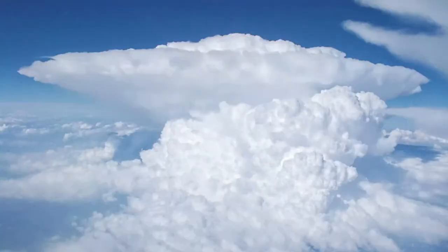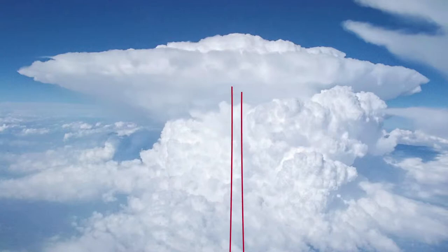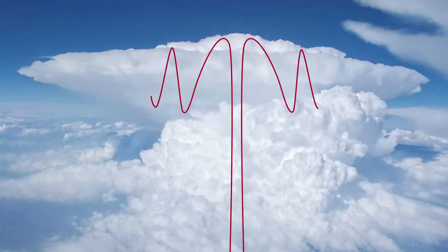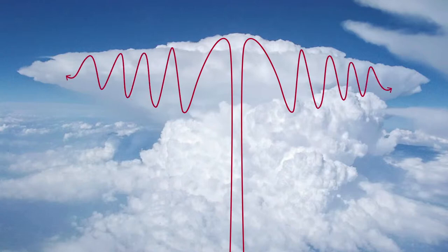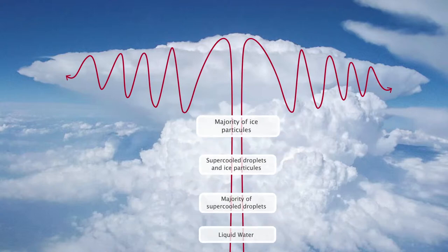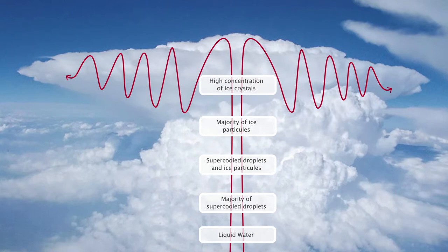In a convective cell, the particles are subject to strong updrafts that carry them up to the stratosphere. Once they reach the stratosphere, the particles move away from the area of highest ascending speeds, oscillating around the tropopause. This shapes the anvil of the cumulonimbus. It is in the anvil that there is the highest concentration of ice crystals.